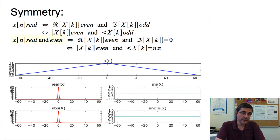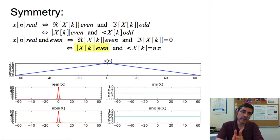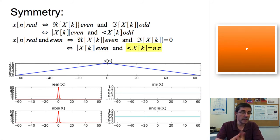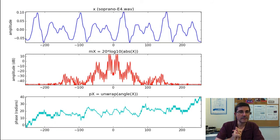If we look at another type of signal — one that is real and also even — then the DFT will show that the real part of the spectrum has even symmetry and the imaginary part is all zeros. In polar representation, the magnitude spectrum has the same even symmetry and the phase spectrum is all zeros. We can see this in an example starting from a triangle, which is an even and real function. We see that the real value of the spectrum is even, the imaginary part is all zeros, the absolute value is even, and the angle is all zeros.